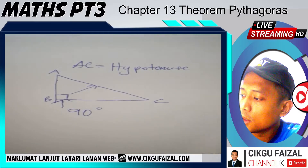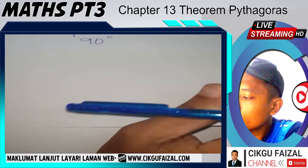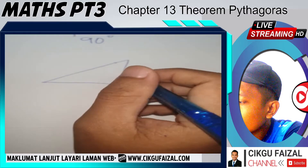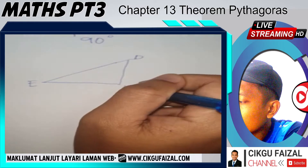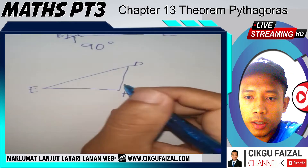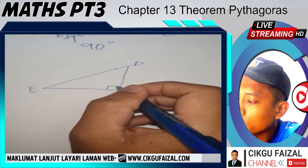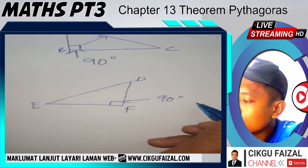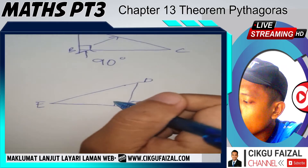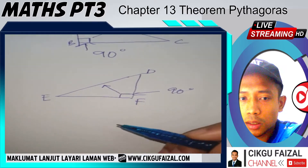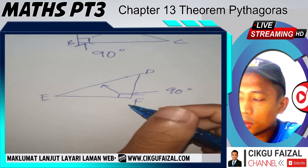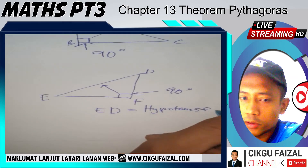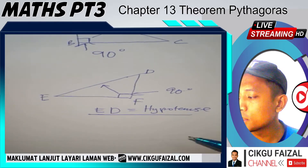Okay, let's look at another example with another shape. In this case, we have different letters: D, E, and F. Regardless of what letter it is, as long as you understand the concept of hypotenuse — the box here indicates the 90-degree angle, as I mentioned before. So, to identify the hypotenuse, it is always at the opposite of the 90-degree angle. In this case, ED is the hypotenuse. It's very easy and simple to understand for this topic.